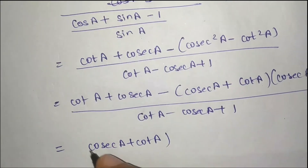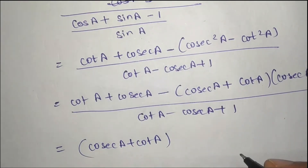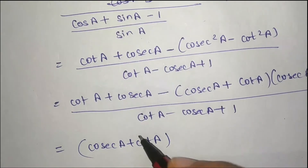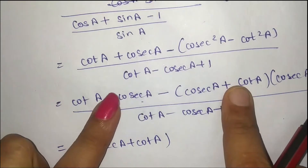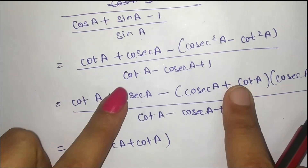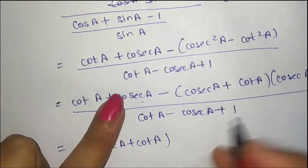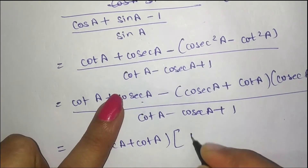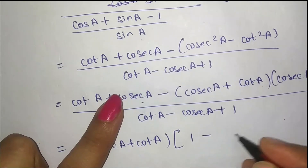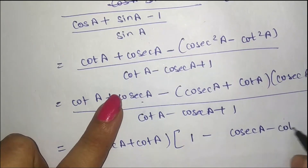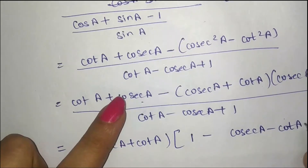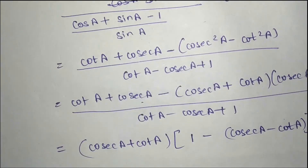Now if we remove the common factor from these two values, what will remain here is 1 minus sec a minus cot a.